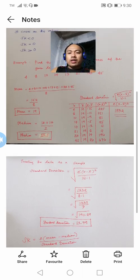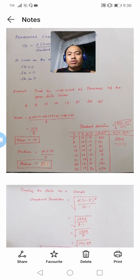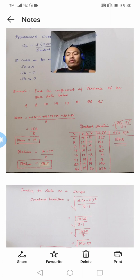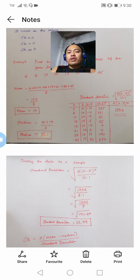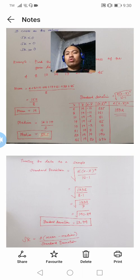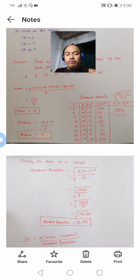How about the median? As you can see in the given distribution, there are 2 middle scores which are 14 and 17. To locate the median, we need to get the average or the midpoint of these 2 middle scores. Getting the sum of the 2 middle scores divided by 2 gives you a value of 15.5.